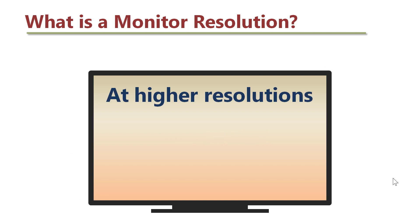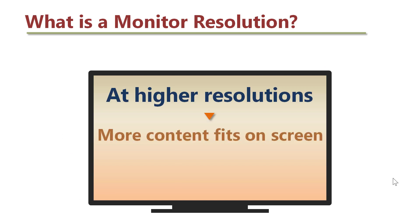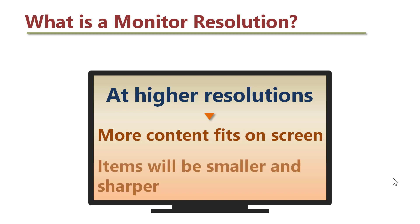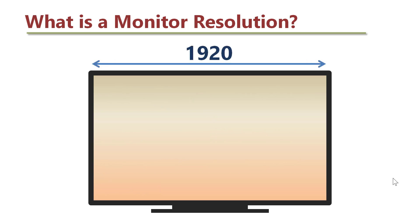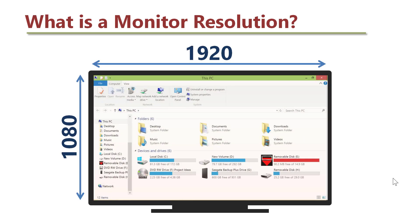At higher resolutions, more content fits on screen and items will be smaller and sharper. Here is an example of a display at 1920 by 1080 resolution. Items are more, smaller, and sharper.